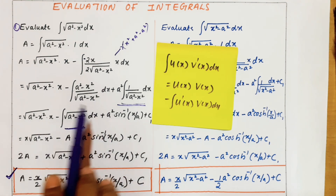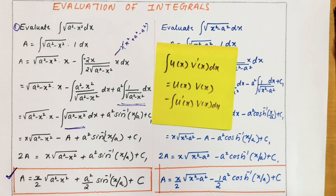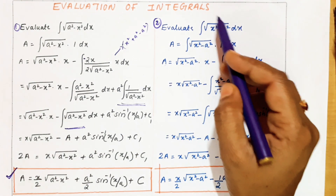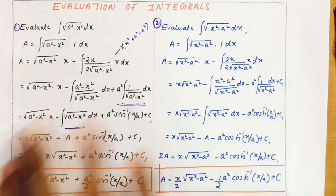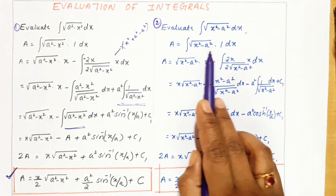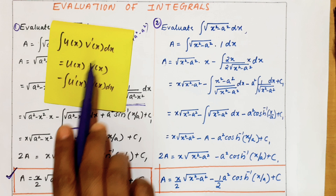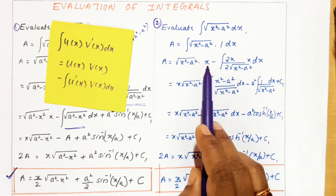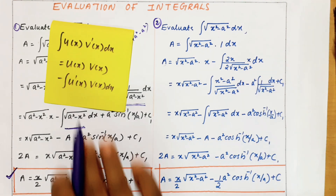So in this we did many steps. Remember this is in the form of integral of u·v' form, so I expanded and did an arrangement to make it in the form of a standard integral. Now see the right side. The second question is: evaluate integral of √(x² - a²) dx — same term but with minus. Same procedure: I equals integral of √(x² - a²) · 1 dx. This is also in the form of integral of u·v' form: u(x)·v(x) minus u'(x)·v(x). So we write √(x² - a²) · x minus integral of [1/(2√(x² - a²))] · 2x · x dx.